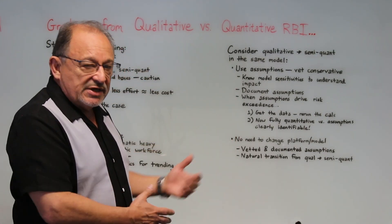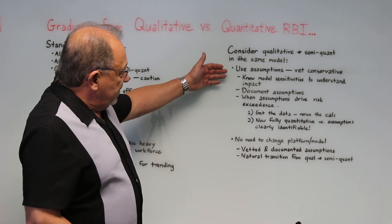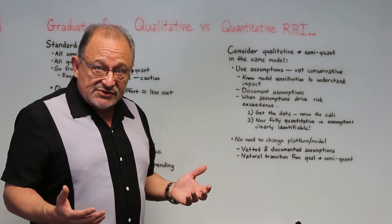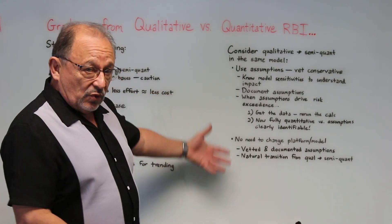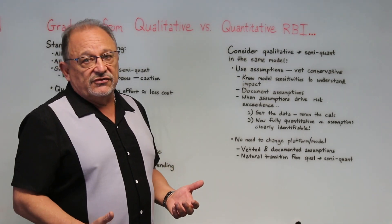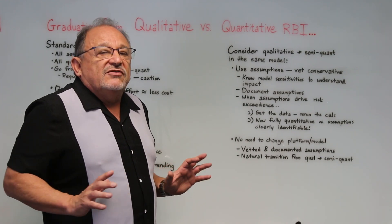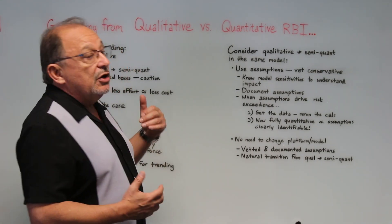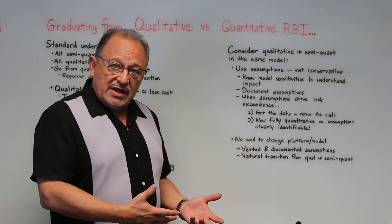Here is the concept: if we start out with a semi-quantitative or more quantitative platform, we can actually treat it like a more qualitative approach by using more sweeping assumptions. Knowing those assumptions are going to be slightly conservative, we can run the calculations and let the risk tell us where we need to go get more data. The beauty of that is everything is in the same platform — the same risk matrix — so we're not comparing apples and oranges. When a piece of equipment needs to be moved up in priority or criticality and the risk is telling us to go get more data, we go do that before spending money on replacement or repairs.